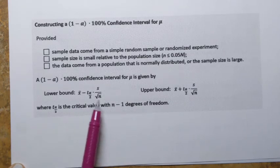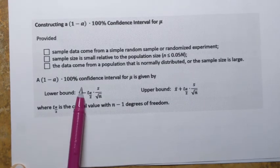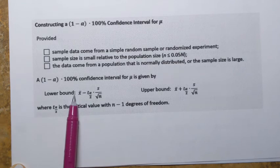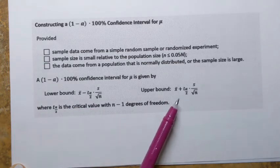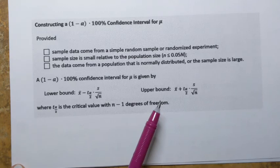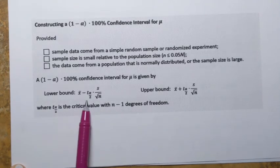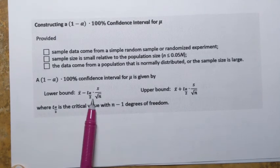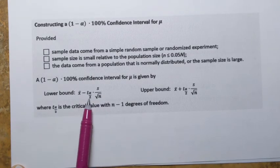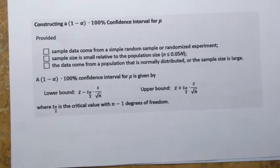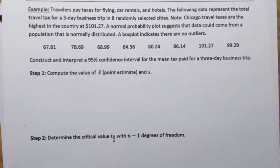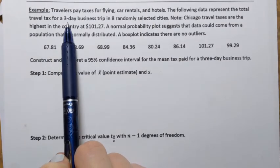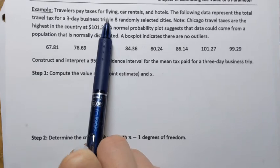If those conditions are satisfied, the confidence interval is constructed starting with the sample mean, then subtracting and adding a quantity called the margin of error. The formula for margin of error will be examined more closely as we work through the example.